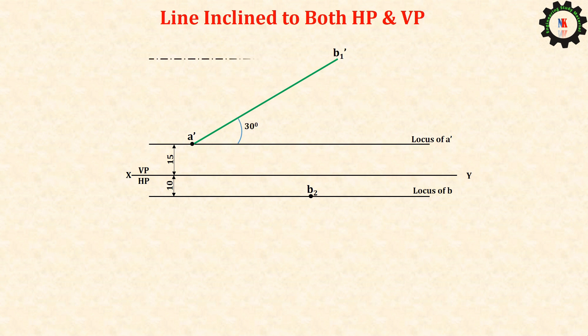Draw the locus of line for B dash. From B2 draw a line with given true length which is inclined at 45 degrees to VP.